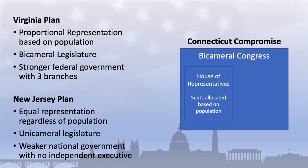—the Great Compromise called for the lower chamber, the House of Representatives, to be filled on the basis of population, as the Virginia Plan called for, while the upper chamber, the Senate, would provide equal representation for all states regardless of population. Further, while the members of the House of Representatives would be directly elected by the people, senators would be selected by the legislatures of each state.